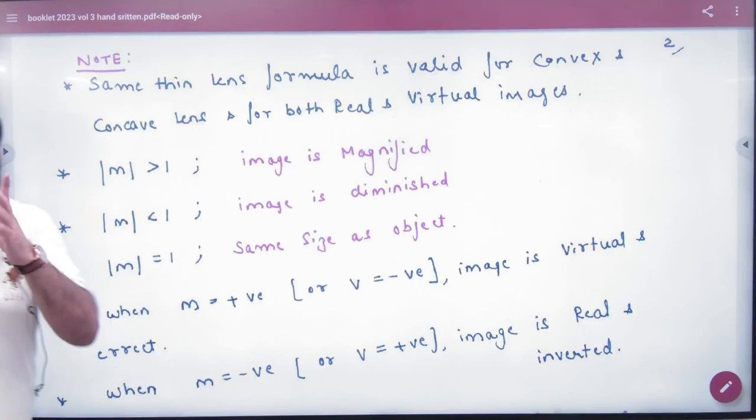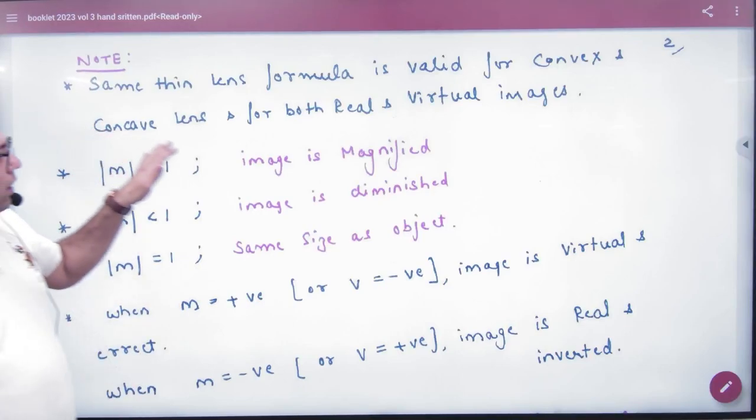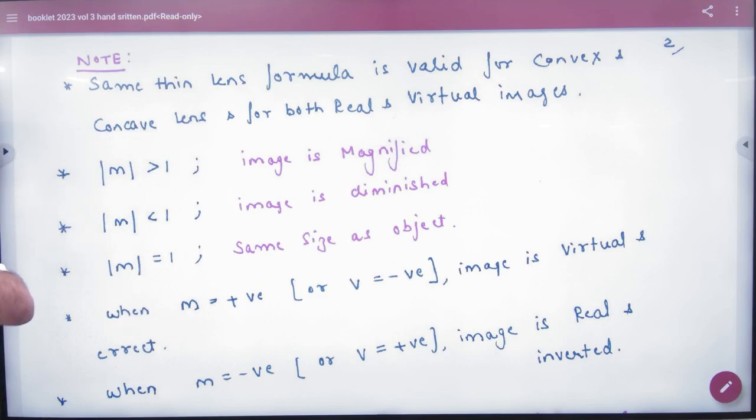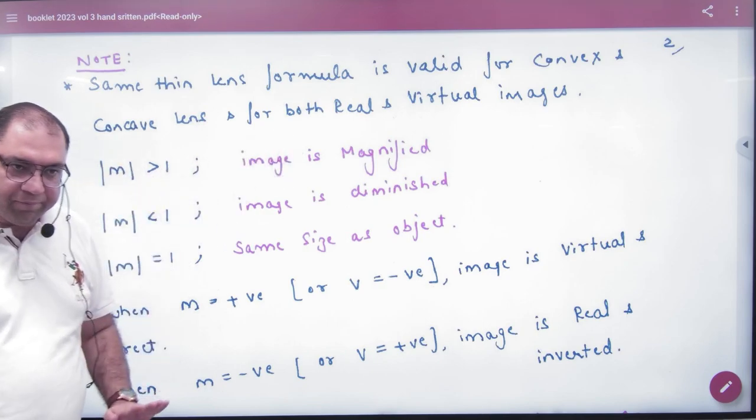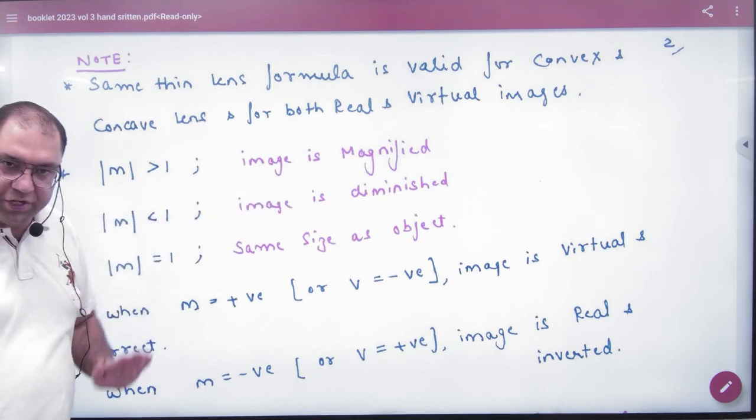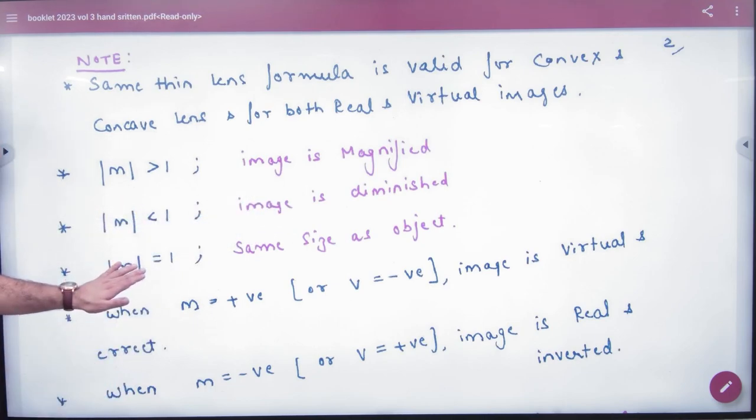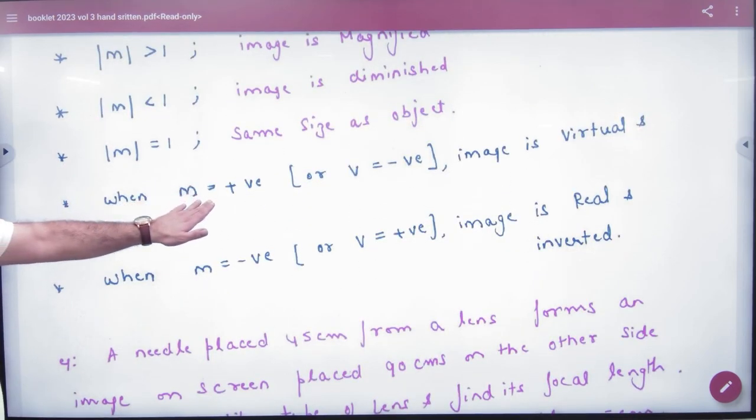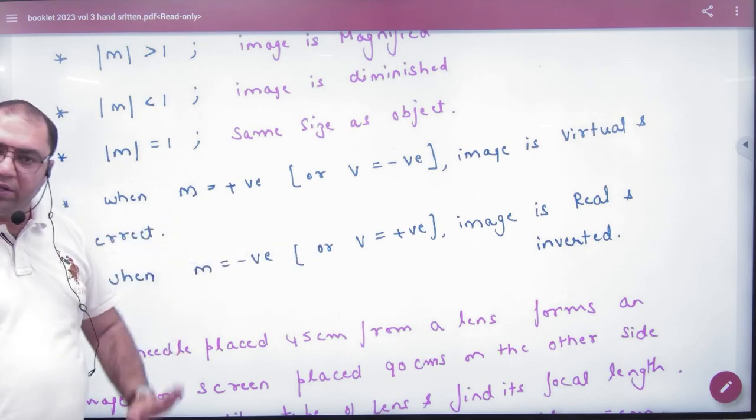First point on magnification: the lens formula applies to both convex and concave lenses. If magnification is greater than 1, the image is magnified. If magnification is less than 1, it is diminished or small. If it equals 1, the image is the same size. Positive magnification means the image is virtual and erect. Negative magnification means real and inverted.